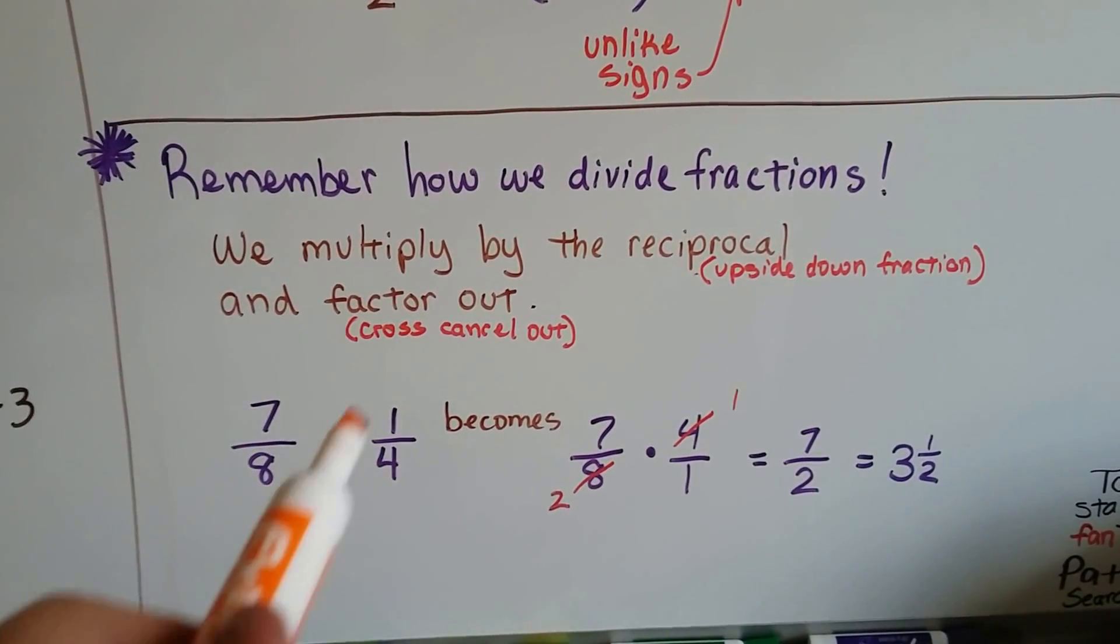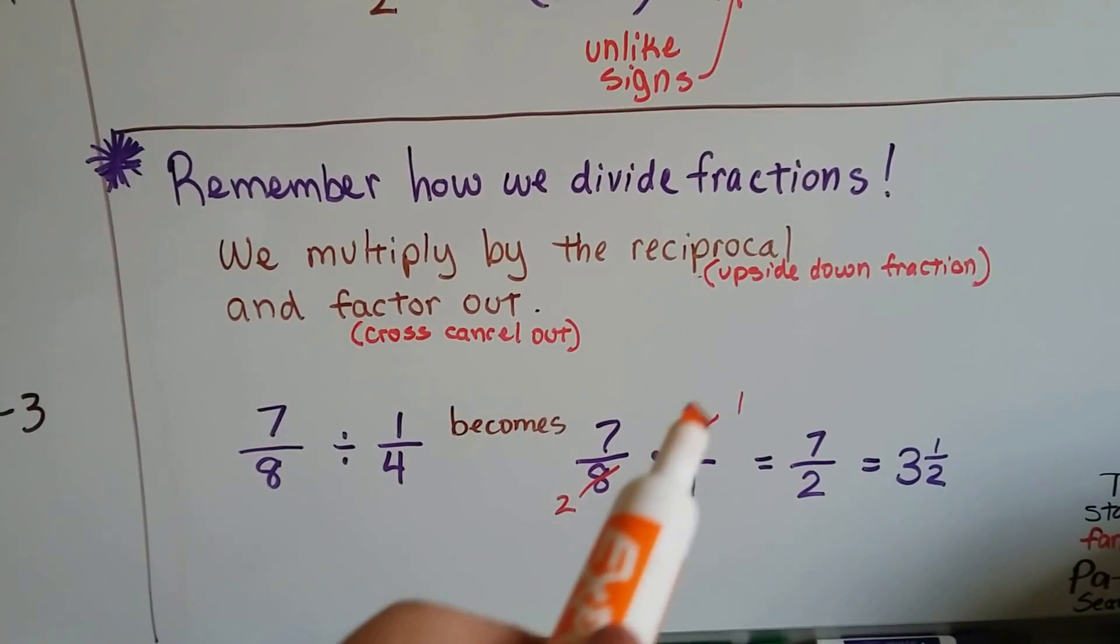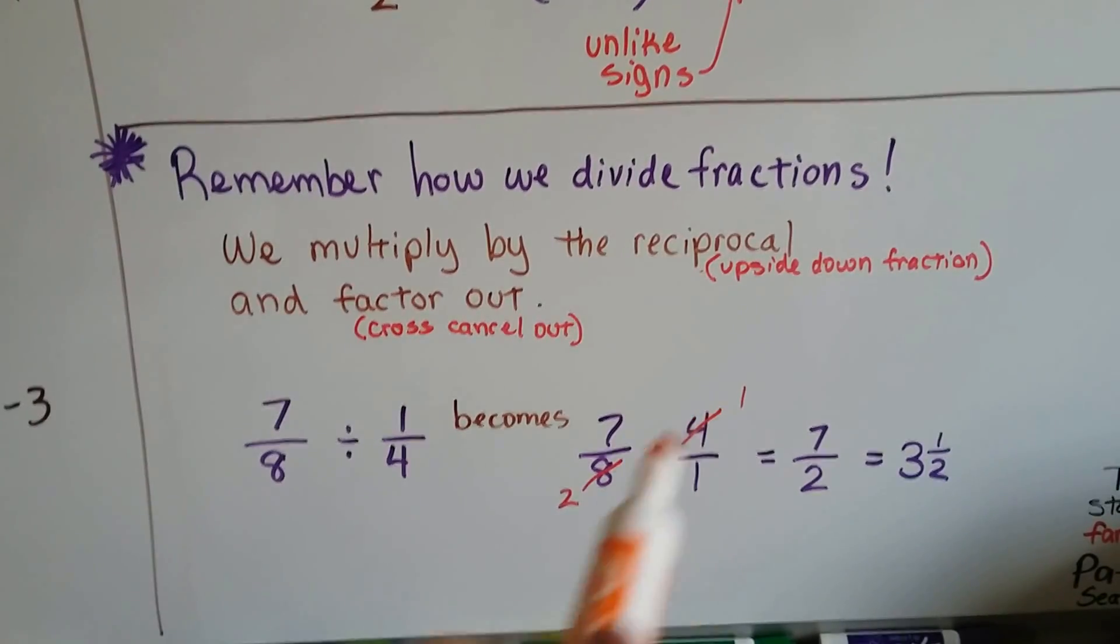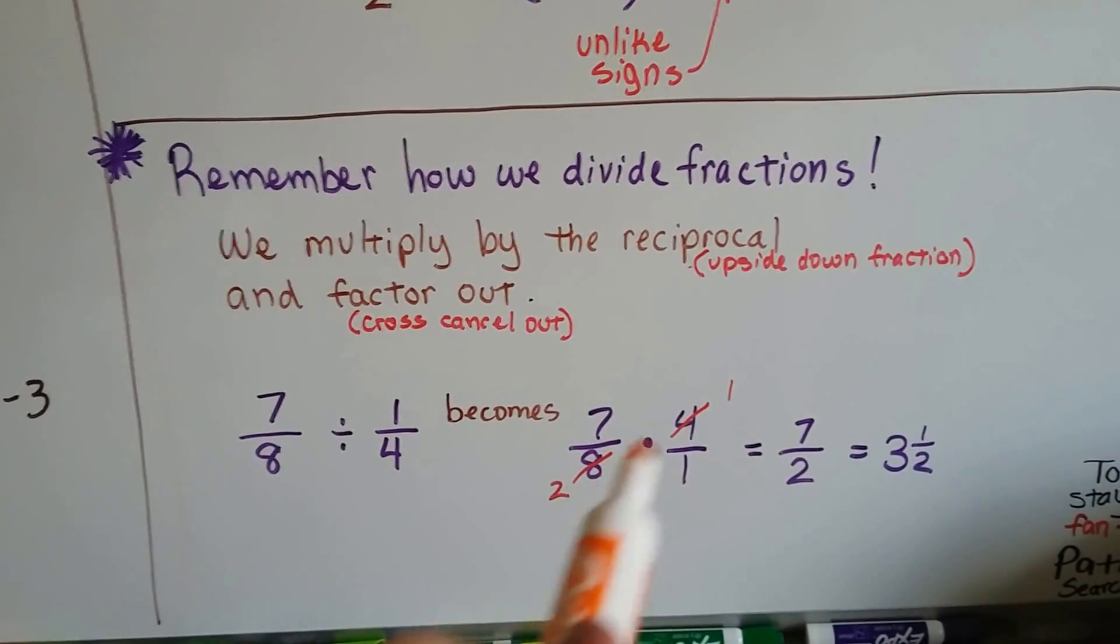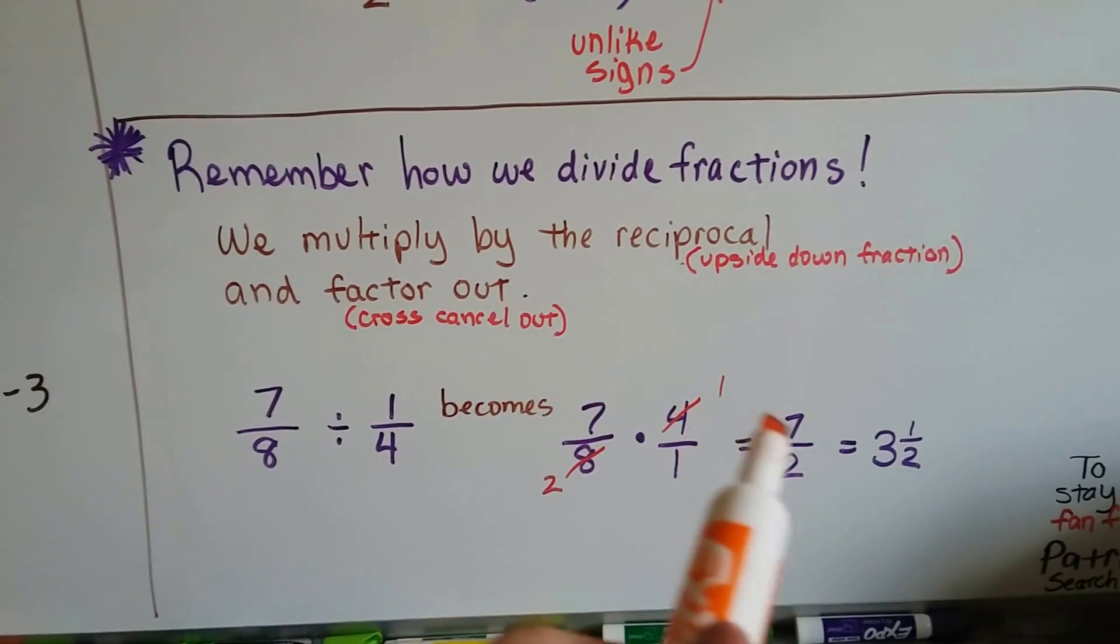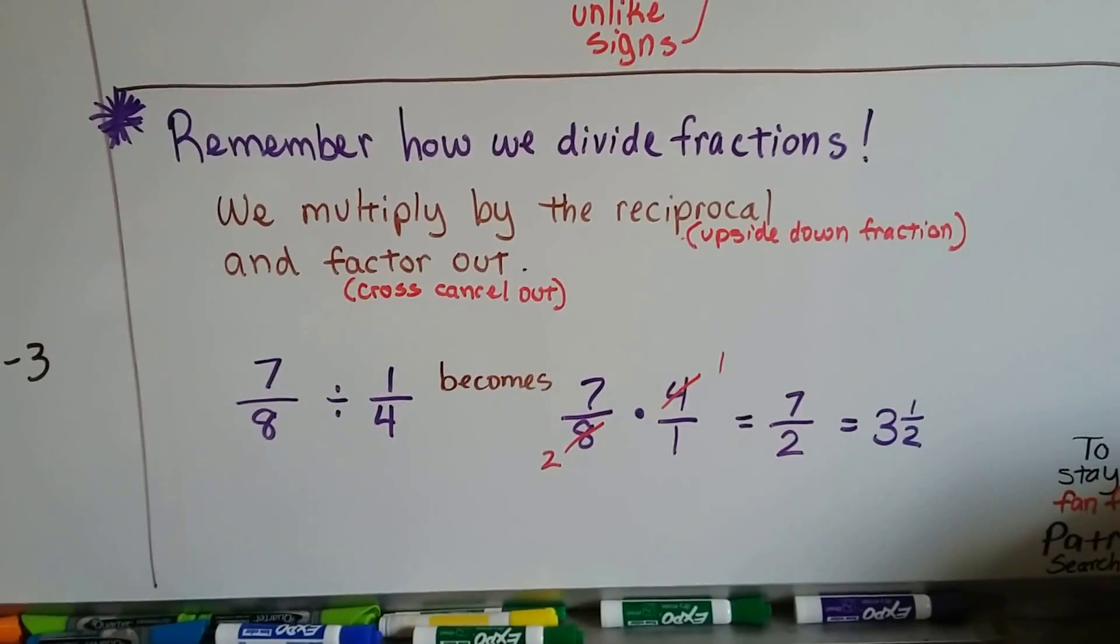If we have 7 eighths divided by 1 fourth, it's going to become 7 eighths times 4 over 1. We're going to flip this guy around so the denominator's on top. And we can cross cancel these out. Four goes into 8 two times. So now we have 7 times 1 is 7 and 2 times 1 is 2 and it equals 3 and a half.